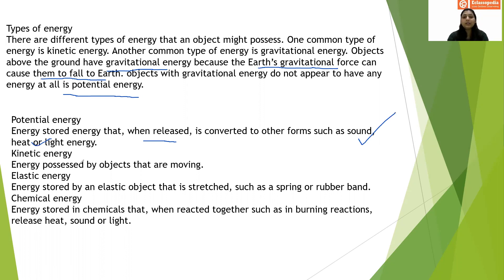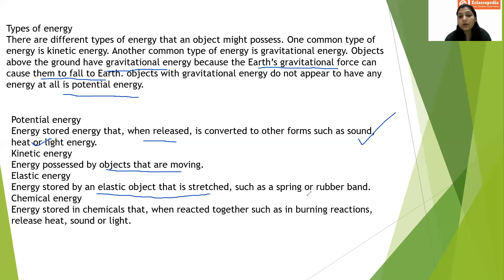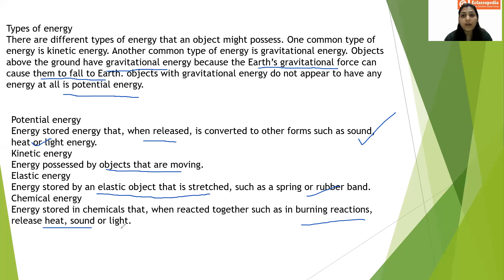Kinetic energy is the energy possessed by objects that are moving — such as a car or vehicle. Whenever an object is moving, it has kinetic energy. Elastic energy is stored by an elastic object that is stretched, such as a spring or rubber band. Then we have chemical energy — energy that is stored in chemicals. When reacted together, such as in burning reactions, they release heat, sound, or light.